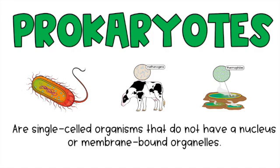Prokaryotes also don't have a nucleus, and we know that the nucleus is like the brain of the cell. Prokaryotes are a lot more simple and they're single-celled, which means that one cell makes up their entire body. Their life is also limited to that one cell, because if the cell dies, well, that is them as the organism.